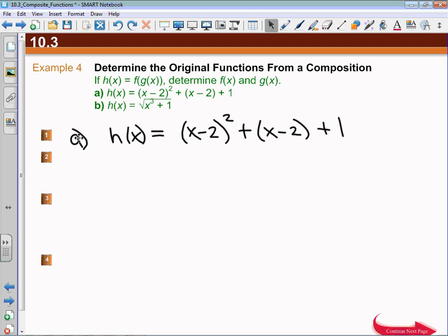So what I'm going to do is take a wild stab at it and say that x minus 2 is g of x. Now, what that allows me to do is I'm going to rewrite this and say, okay, function h—keep in mind that function h is f of g of x. So I'm going to say that f of g of x is equal to, well...